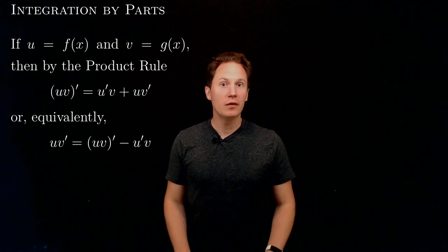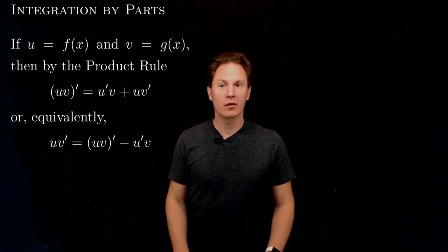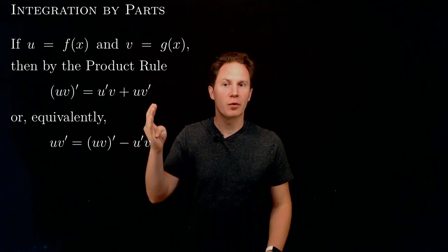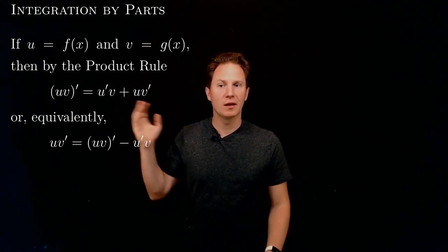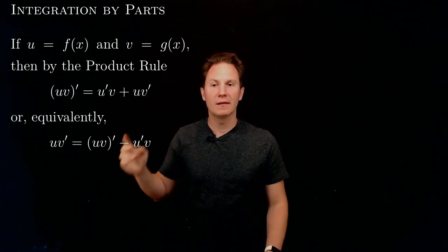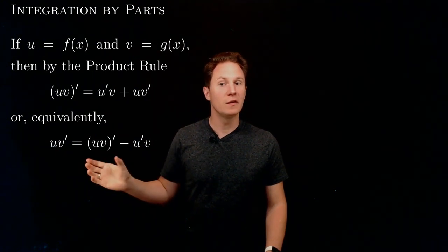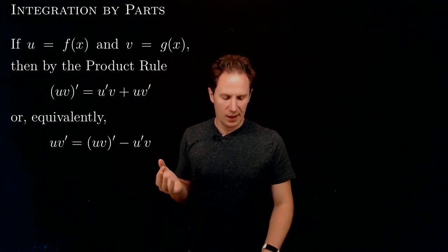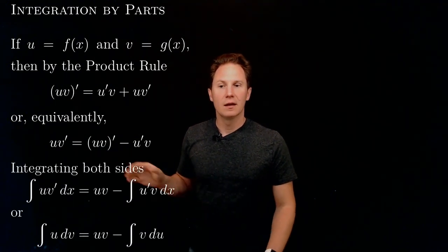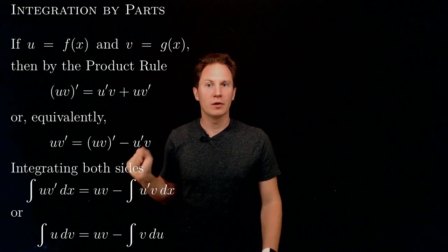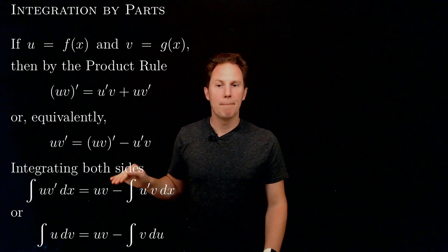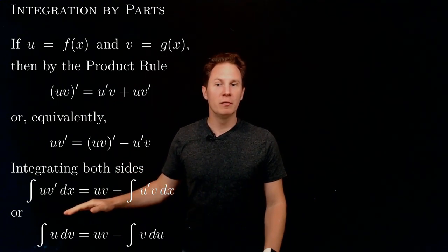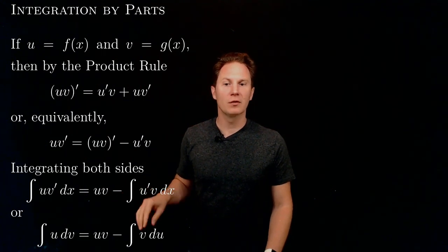If u equals f(x) and v equals g(x), then the product rule can be expressed as follows: the derivative of u times v is u'v + uv'. Rearranging by subtracting u'v from both sides gives uv' equals the derivative of u·v minus u'v. Integrating both sides, the integral of u·v' dx equals u·v minus the integral of u'v dx, or simply: the integral of u dv equals u·v minus the integral of v du.